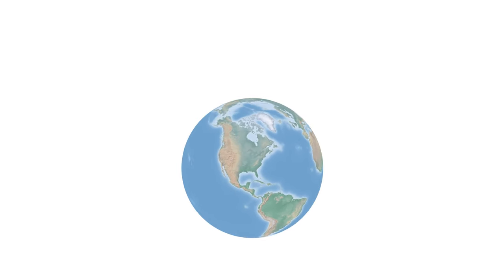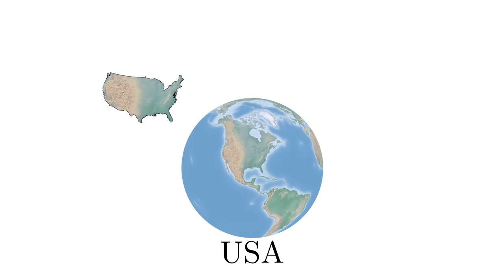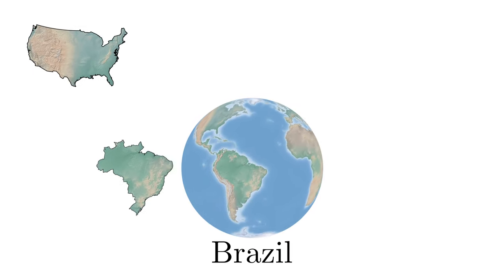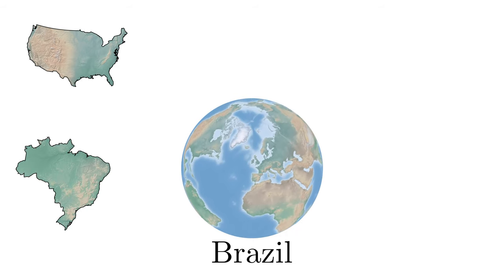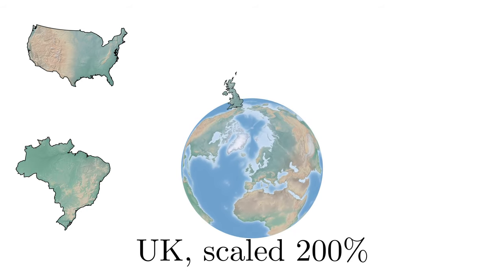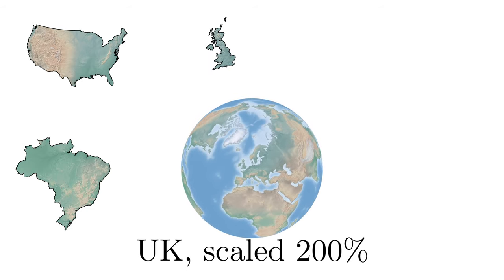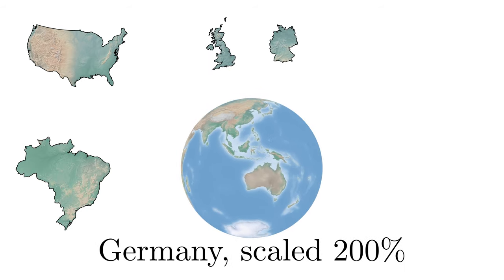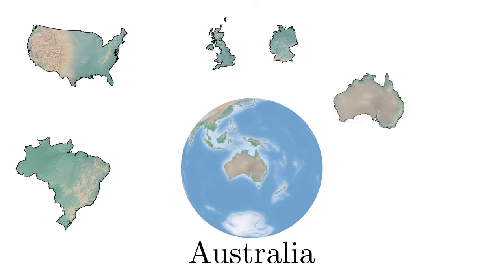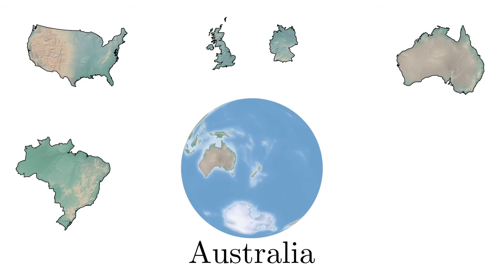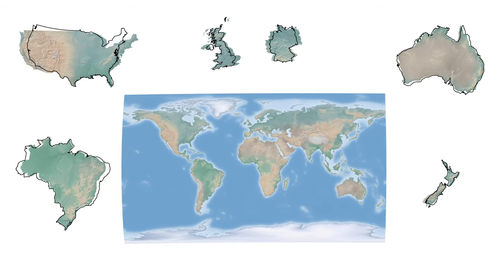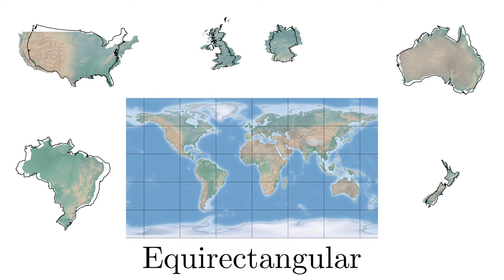Globes give a good sense of the shape and size of countries, but also limit your view to less than half the world at any one time. If we unwrap a globe and lay it flat, the result is a projection that preserves neither the shape nor relative size of countries.